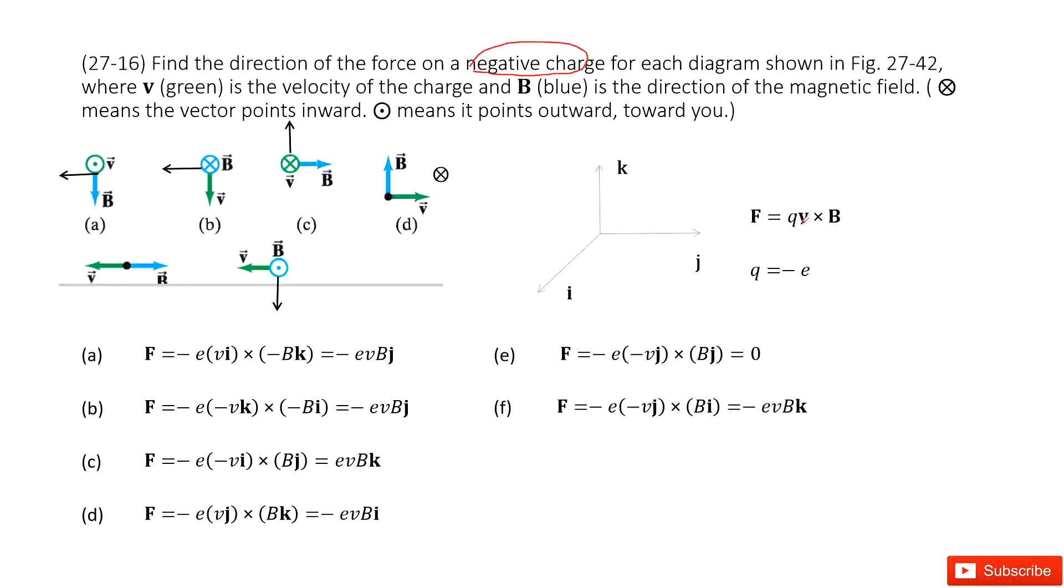We just use the equation from the Lorentz force. F equals QV cross B. So this is the magnetic force. V is velocity, B is magnetic field.